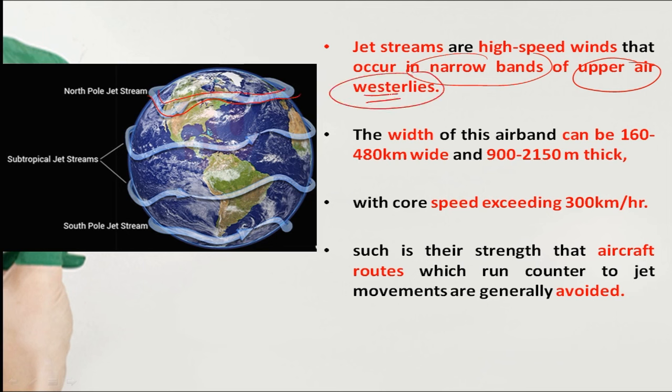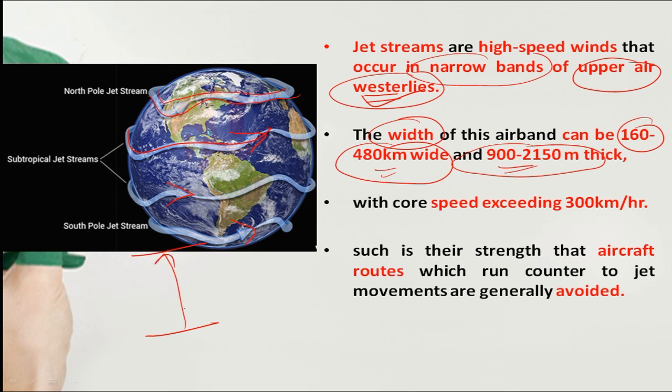Westerly means any wind that originates from west to east. These are mainly westerlies, though there are some easterly jet streams, but the major jet streams are westerly. The width is 160 to 480 km and the thickness is 900 to 2000 meters.